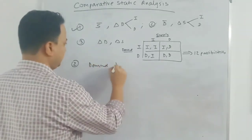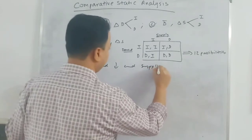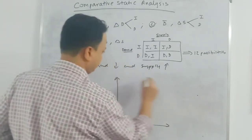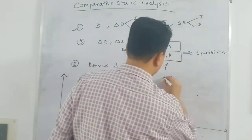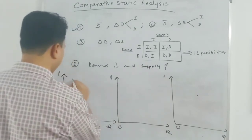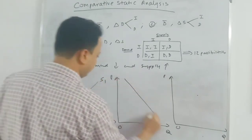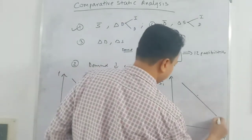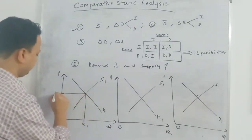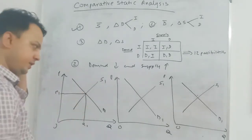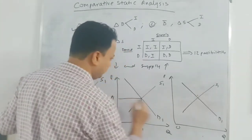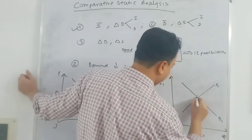Third case: demand is decreasing and supply is increasing. Let me draw three graphs. Price here, quantity here, origin here. D1 is my initial demand, S1 is my initial supply, and the initial equilibrium is Q1, P1.